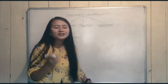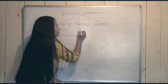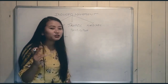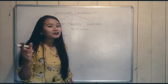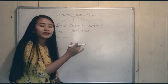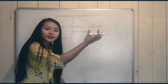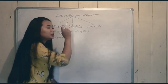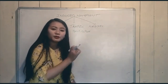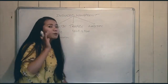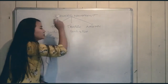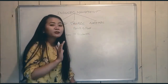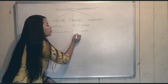Next is tropic movement. Tropic movement is the movement of only the parts of a plant body in response to external stimuli. So in tactic movement, the whole body moves toward or away from the direction of external stimuli. In tropic movement, only parts of the plant move. It is a movement of growth.